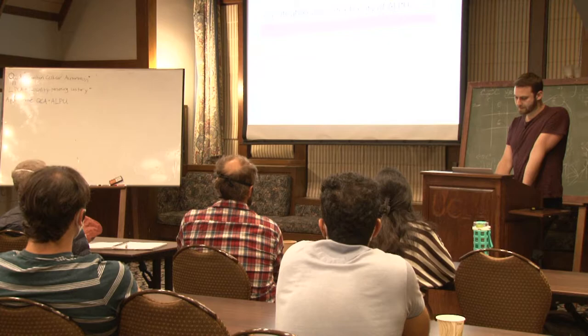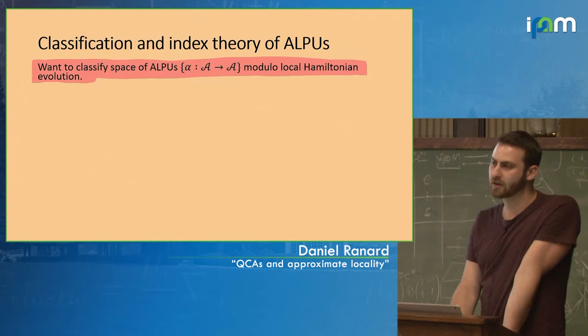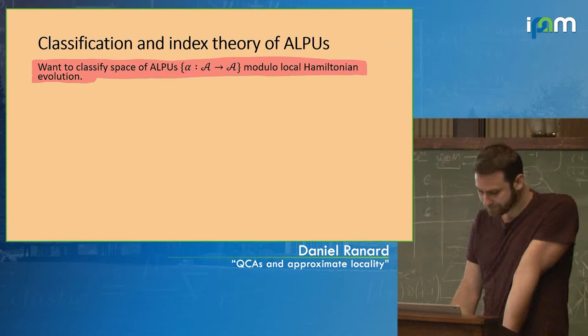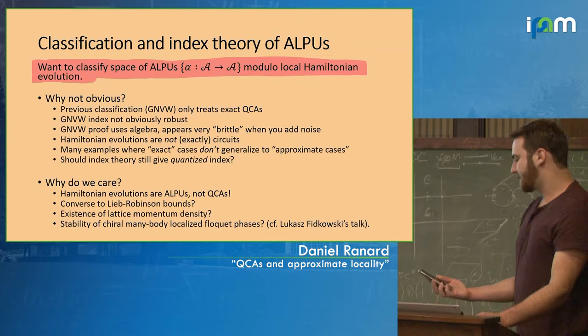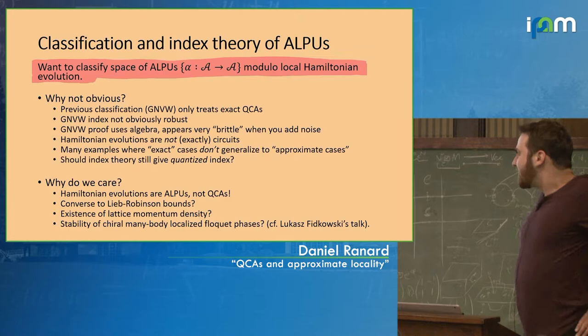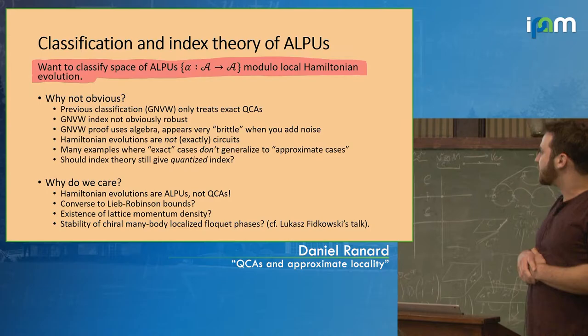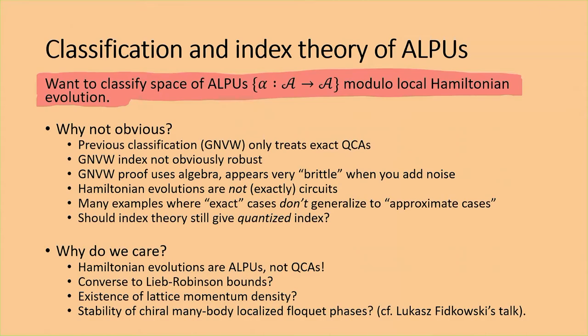We want to classify the space of ALPUs modulo local Hamiltonian evolution. Why is it not obvious? The GNVW index is only for exact locality conditions. You might think it's going to be easy once we add some epsilons. But one reason it's hard is that the GNVW proof uses tools about algebras — for instance, it talks about the algebra generated by some operators. If you take two operators that generate a proper subalgebra and perturb them by a tiny random amount, generically they now generate the whole algebra. So the notion of how big an algebra is generated is infinitely brittle under perturbations.